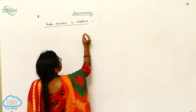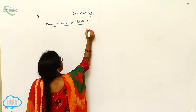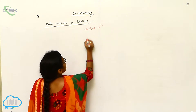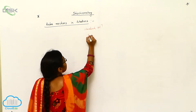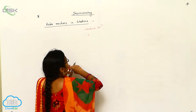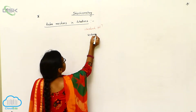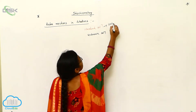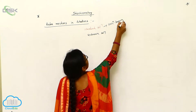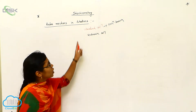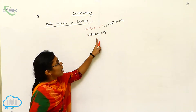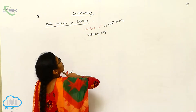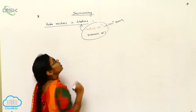In titration, we use two terms: one is the standard solution and the other is the unknown solution. Standard solution is nothing but a concentration-known solution. Using the standard solution, you have to calculate the concentration of the unknown solution. This process is called titration.